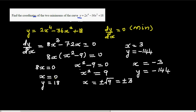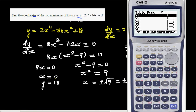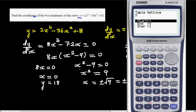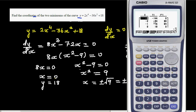So let me show you the coordinates. If you just enter the table menu, 2x to the power 4 minus 36x squared plus 18, let's go from minus 3 to plus 3. At minus 3 you have got minus 144, the gradient is 0 that's confirmed. At 0 it's got 18, so that's the maximum, and when you go to 3 you got again minus 144.